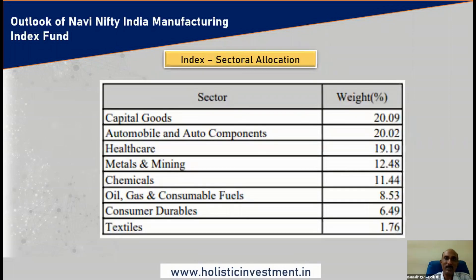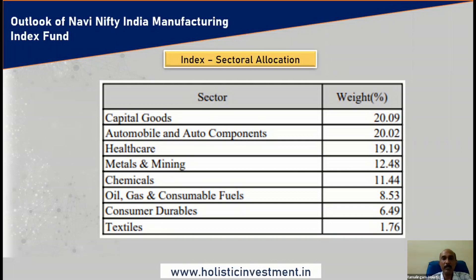At the sector level, this particular index has close to eight sectors: capital goods, automobile, healthcare, metals and mining, chemicals, oil, gas and consumable fuels, consumer durables, and textiles — because manufacturing sectors are well diversified and not one single sector. However, capital goods, automobile, and healthcare alone account for 59% of the overall exposure. That means at the sectoral level, there is concentration.